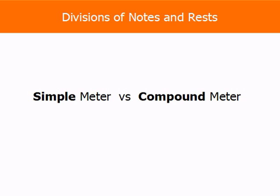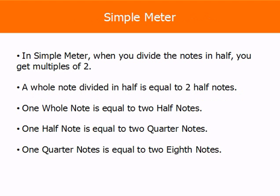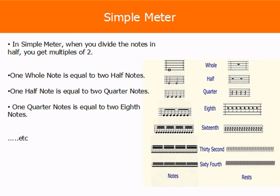So first we have to look at simple meter versus compound meter. Simple meter is when you divide the notes in half, you get multiples of two. A whole note divided in half is equal to two half notes. A whole note is equal to two half notes, and a half note is equal to two quarter notes. One quarter note is equal to two eighth notes. In simple meter, when you divide notes in half, you get multiples of two.